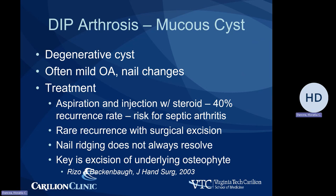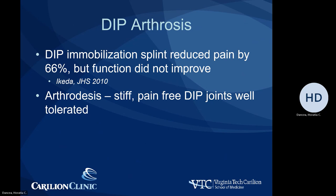The surgery can easily be done under local anesthesia with the patient awake. It has been shown that immobilization does reduce pain significantly, but function, as expected, does not improve. As a more definitive surgical treatment for severe DIP joint arthritis, arthrodesis — essentially fusion of the DIP joint — can be done with multiple techniques. The most common technique currently is use of a headless compression screw.